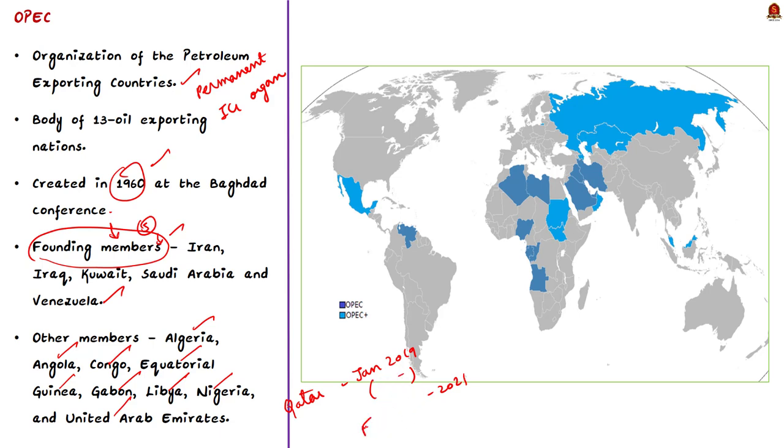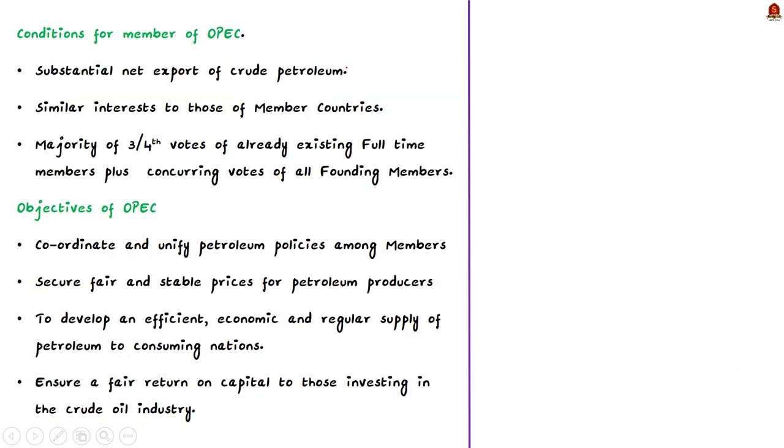Now let us see what are all the conditions that oil exporting country need to fulfill to become a member of the OPEC. Any country with a substantial net export of crude petroleum which has fundamentally similar interests to those of member countries may become a full member. To become a full-time member of OPEC, a majority of 3 by 4 votes of already existing full-time members is needed, including the conquering votes of all founding members.